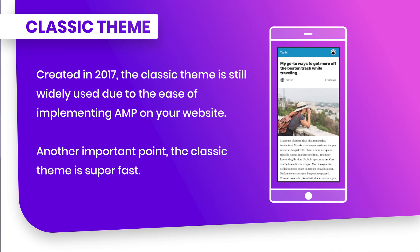Many users think that if you want to use AMP, you need to use that classic version. But it has been a long time since we have had other options where you can do some customization even without code. The classic theme — now called the legacy theme — was created in 2017. That theme is still widely used because of the easy way to implement AMP, and it's also a super fast theme. But there is a problem: if you don't do any customization, your website will look like hundreds of thousands of websites on the internet. So if you want to step up from your competitors, the important thing is to do some customization and make your website match with your brand.